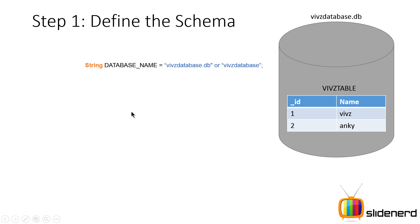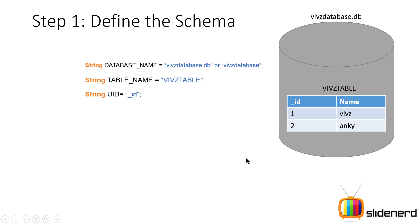What I'm going to do is create some different strings. For example, I'll say string DATABASE_NAME is wivsdatabase.db — you can specify the extension if you want, otherwise you can omit it, no problem, it will work either way. Then I will specify the table name by saying string TABLE_NAME is wivs table. Then the uid, which is going to be _id, the first column. For each column I'm trying to create a string that contains the name of the column, the same way I created a string that contains the name of our table.